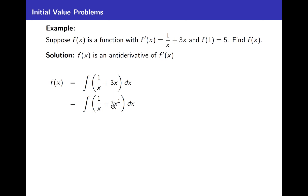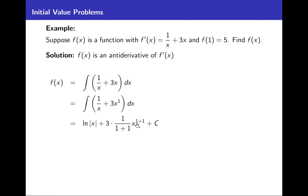Writing 3x as 3x to the power of 1 to emphasize we'll use the power rule for integration on that term. The antiderivative of 1 over x is ln of absolute value of x. Then we have a constant multiple of 3 times — using the power rule for integration on x to the power of 1 — we get 1 over 1 plus 1, times x to the power of 1 plus 1, plus c. Cleaning that up, f of x equals ln of absolute value of x plus 3 halves x squared plus c.